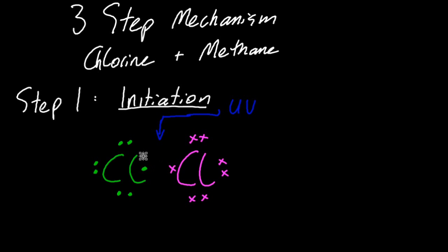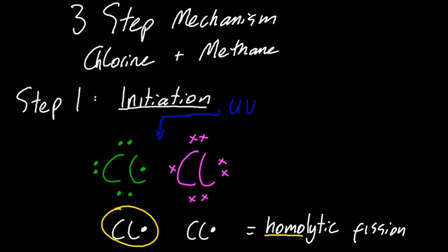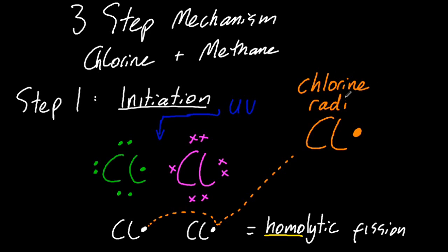It's actually homolytic fission, where the electrons in the bond are placed one to each chlorine atom. Homolytic fission. Homo means same. So it produces two things that are the same. What is that funny looking dot there? Well that dot means it's a radical. So what's a radical?